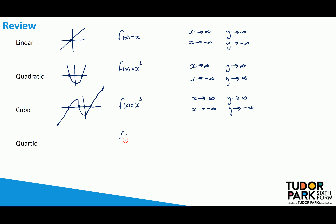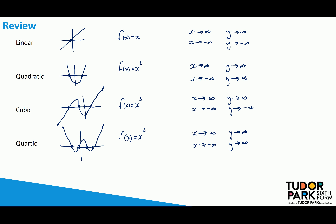Quartic functions are the next one up — graphs of the form x to the power of 4. As x gets very large, y will also get very large. As x gets very large and negative, similar to the even function x-squared, the y-value will still be positive. So we get positive values at either end, and we can have a maximum of four roots. After quartic, we could talk about quintic functions, which would again be an odd power, giving a similar form to the cubic equation.